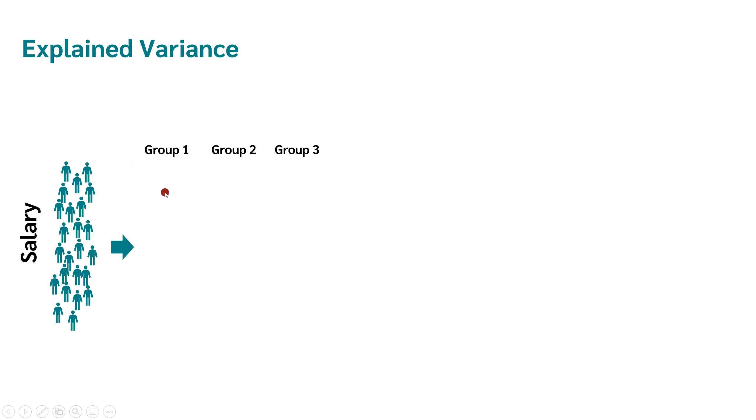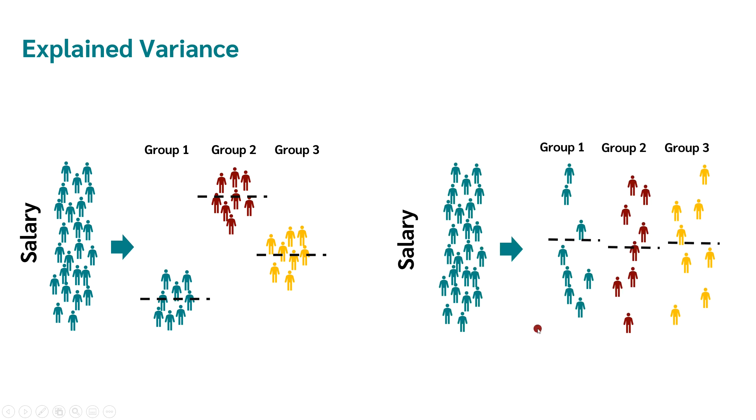In the extreme case, the result could be that the salary in group 1 has this distribution, in group 2 that distribution and in group 3 the distribution would look like this. In this case, the division into groups could explain a lot of variance in the variable salary. The result would be different in this case. Here, however, we could explain almost no variance by forming the three groups. Within the groups, the variance is almost the same as in the whole sample. Therefore, it does not matter whether we form the groups or not. The three groups have nearly no influence on the salary.